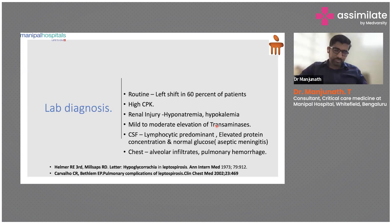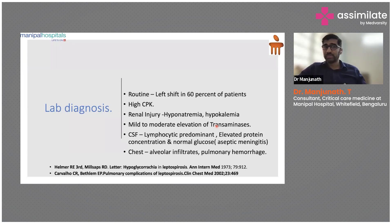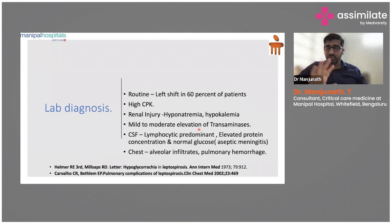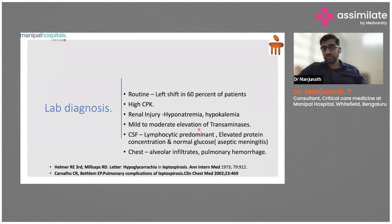Lab diagnosis is non-specific but shows involvement of all organs. CBC shows a left shift of WBCs in 60% of patients. High CPK reflects muscle injury. Hyponatremia and hypokalemia are seen with renal injury — these are not diagnostic but indicate organ failure is ongoing.